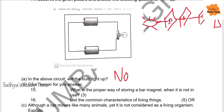Question 16: List the common characteristics of living beings. Common characteristics include growth, breathing, excretion, response, movement, and stimulus. For five marks, write a minimum of five points. Although a car moves like animals, it is not considered a living organism because a car does not show any characteristics of living things such as nutrition, respiration, or reproduction.